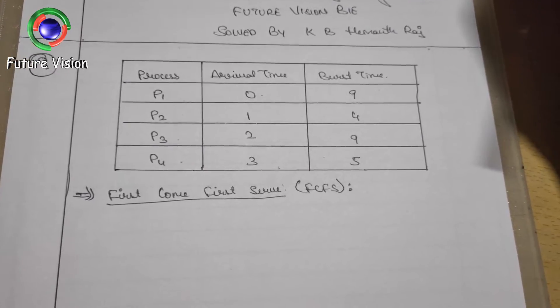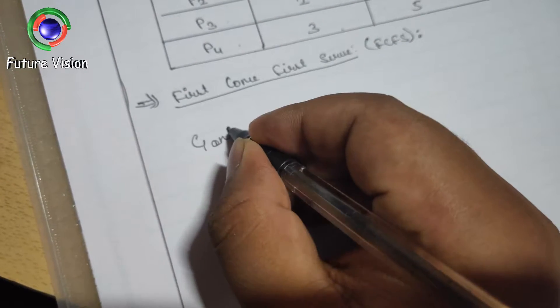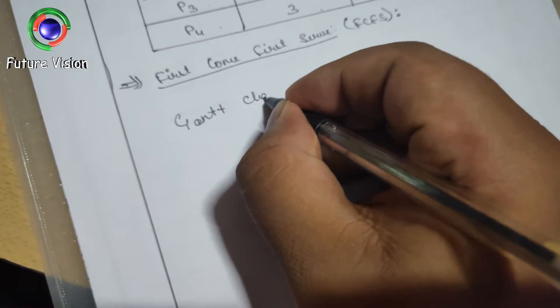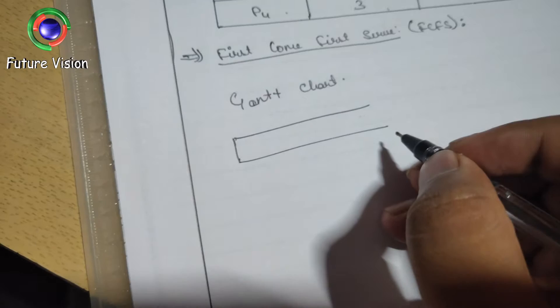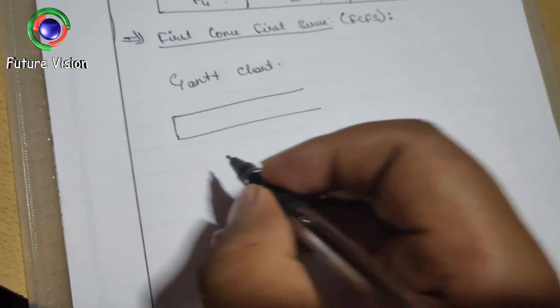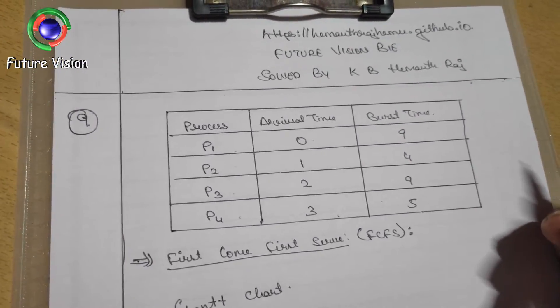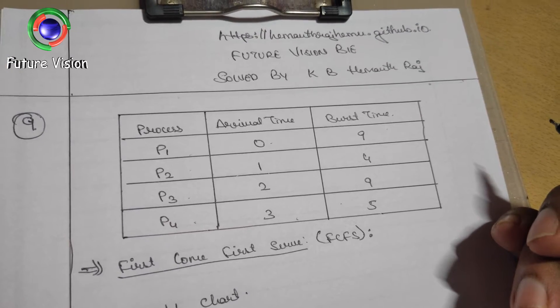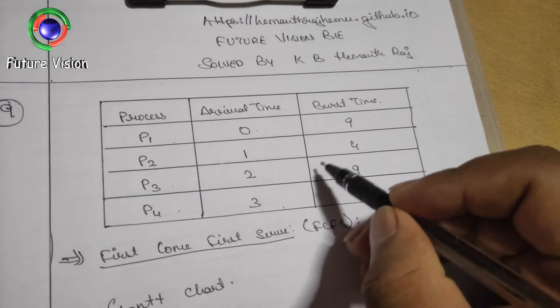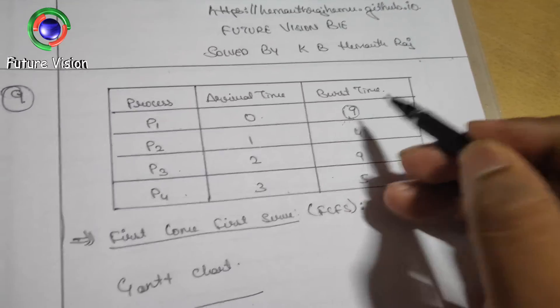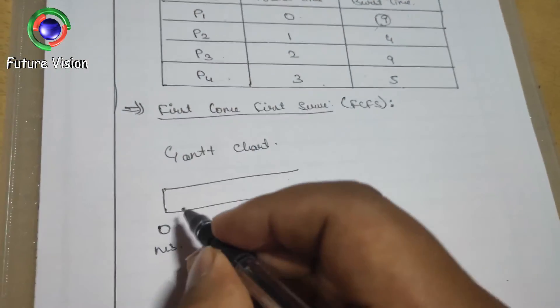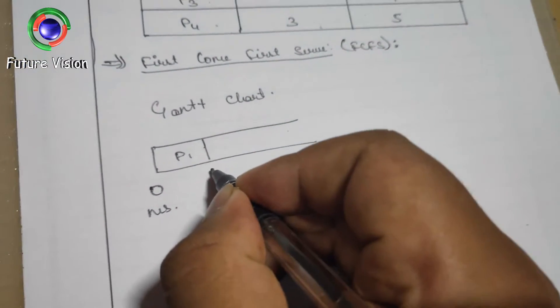The first step is to draw the Gantt chart. The point to remember is that the Gantt chart always starts from the 0th millisecond. Based on our table, the arrival time 0 starts from Process 1, which has a burst time of 9. So we draw P1 here till the 9th millisecond.